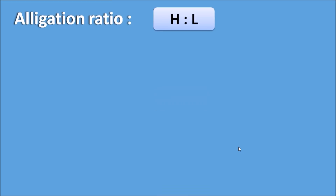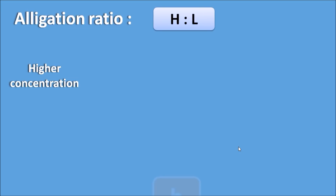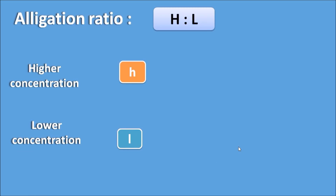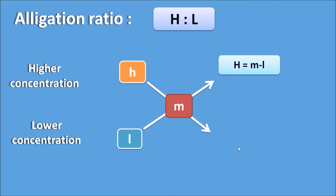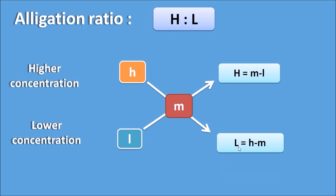What is allegation ratio? Allegation ratio is indicated by the ratio H is to L, where H is the proportion of the higher concentration and L is the proportion of the lower concentration. The final or intermediate concentration required is indicated by letter M. By applying allegation we have two subtractions: H is equal to M minus L, and L is equal to H minus M. This ratio H is to L is called the allegation ratio.